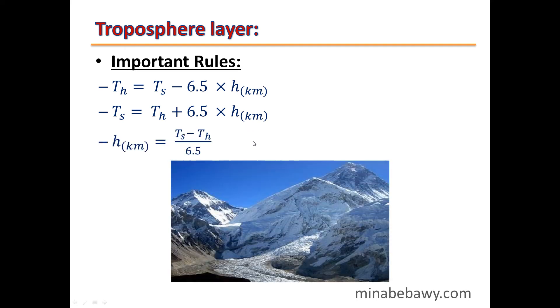To find the height of a mountain: Height = (Temperature at bottom − Temperature at top) ÷ 6.5.